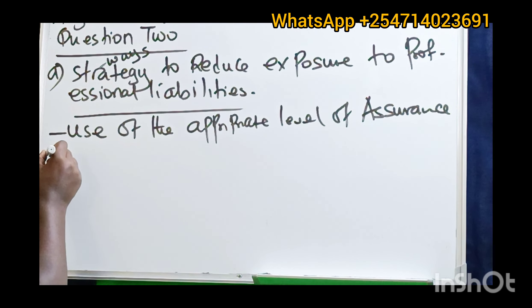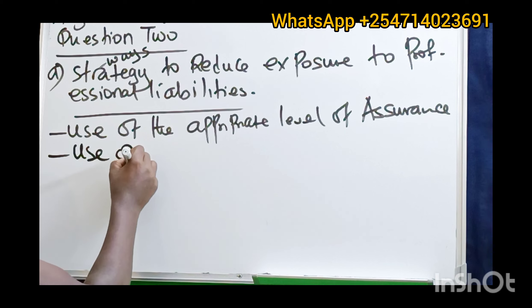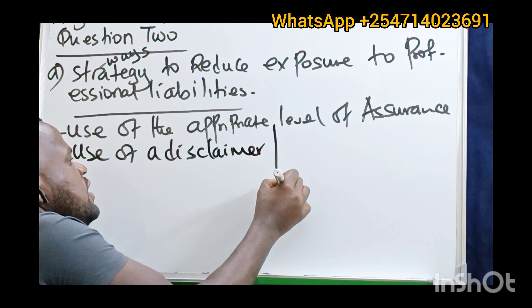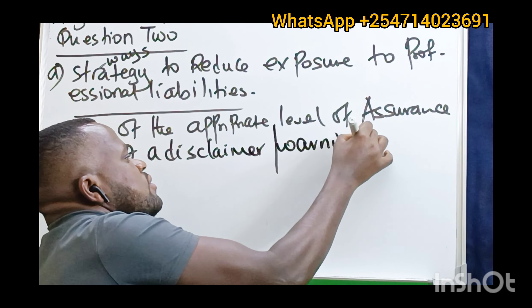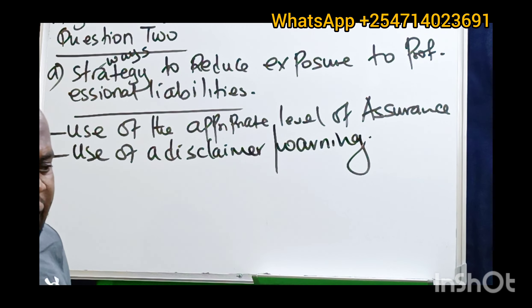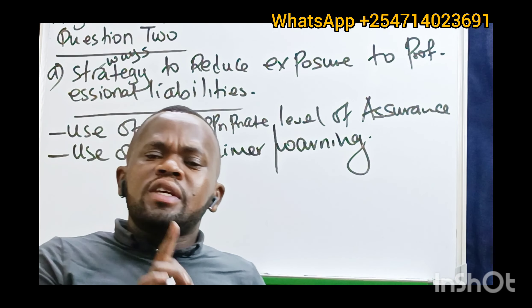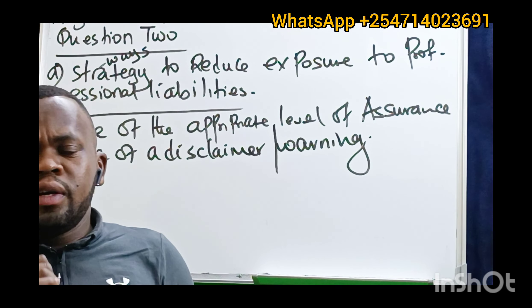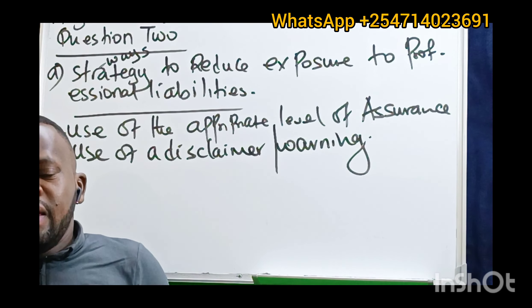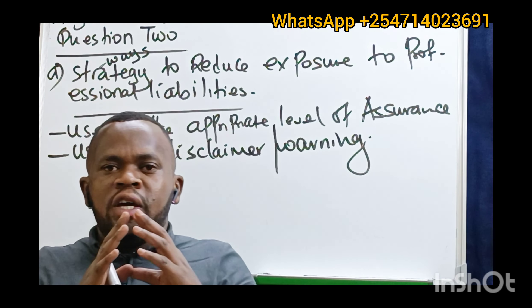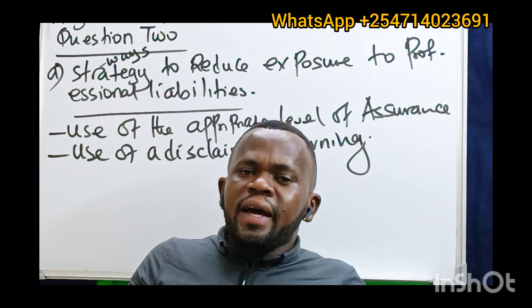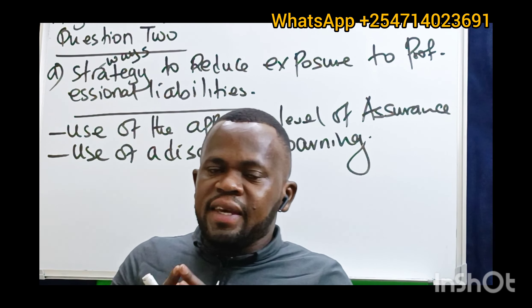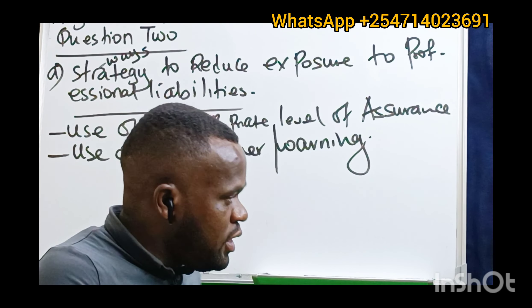Another way of reducing the liability of the auditor is use of a disclaimer. A disclaimer is a warning. In case the auditor does not want other parties — like third parties — to rely on his report, he can attach a disclaimer to the report to stop reliance on it by third parties in making decisions. It is a way of reducing the liability of the auditor.